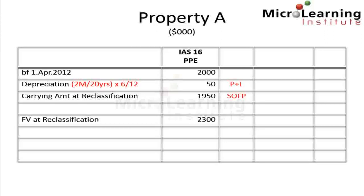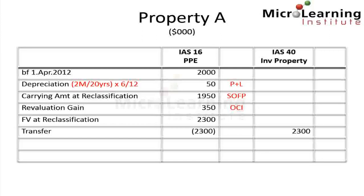When transferring the property from IAS 16 property, plant and equipment to IAS 40 investment property at fair value, we must consider the fair value at the date of reclassification, which was $2.3 million. Thus under IAS 16, prior to reclassification, we must recognize a revaluation gain of $350,000 as the balancing figure. This gain is credited to other comprehensive income, and we then transfer the property at its fair value of $2.3 million to the investment property classification.